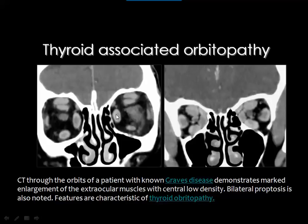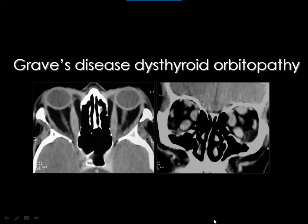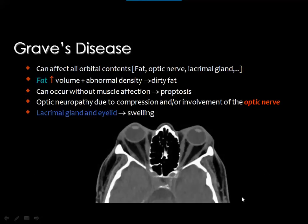You can see involvement of the medial rectus, inferior rectus, and superior rectus levator complex. Graves' disease also produces an increase in orbital content and orbital fat volume, which appears dirty due to reticulations and deposition of abnormal material. It can also affect the lacrimal gland, eyelid, and optic nerve, though the most commonly involved structures are the extraocular muscles and fat. Enlargement of the extraocular muscles may also cause compression of the optic nerve near the orbital apex.